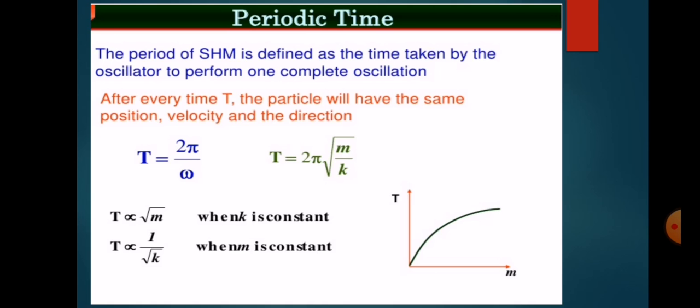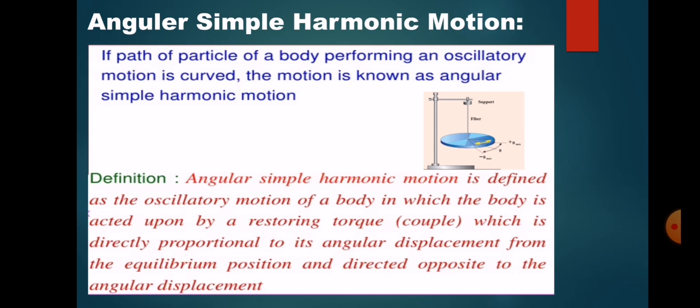From that formula we can say that the time period of a linear simple harmonic motion is directly proportional to the square root of mass m of the body and inversely proportional to the square root of the force constant k. This graph shows that as mass increases, the time period also increases, and after a particular mass the time period is saturated. The next part of this lecture is angular simple harmonic motion.